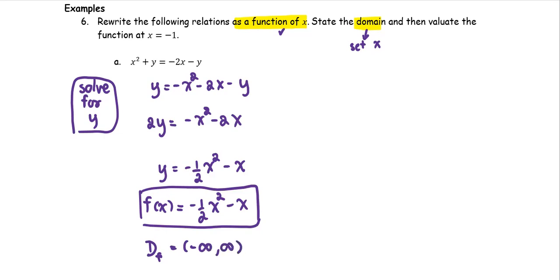Next, we are going to evaluate the function at x equals negative 1. So f at negative 1 equals negative 1 half, replace x with negative 1 squared, and then minus negative 1. As you see, x at the input is negative 1. We square the negative 1 for the first term and then subtract by negative 1 for the second term.